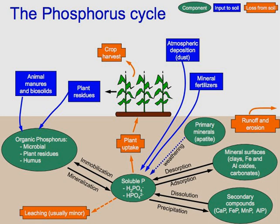The phosphorus cycle is the biogeochemical cycle that describes the movement of phosphorus through the lithosphere, hydrosphere, and biosphere. Unlike many other biogeochemical cycles, the atmosphere does not play a significant role in the movement of phosphorus, because phosphorus and phosphorus-based compounds are usually solids at the typical ranges of temperature and pressure found on Earth.